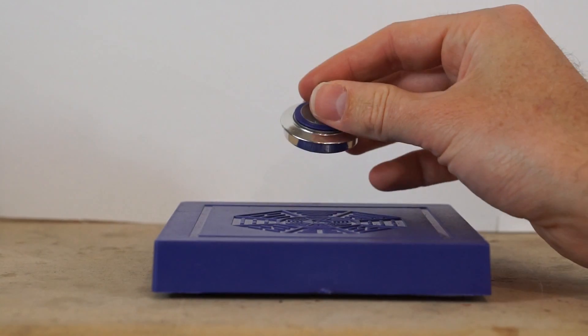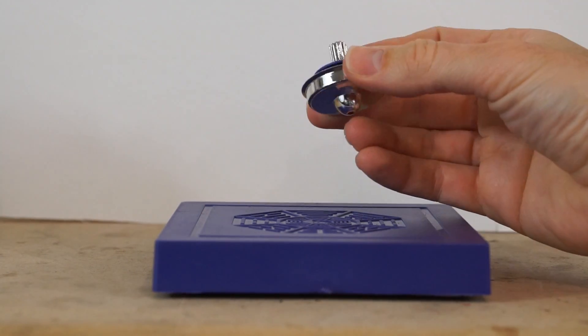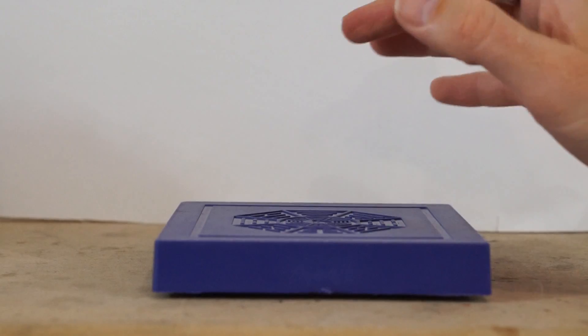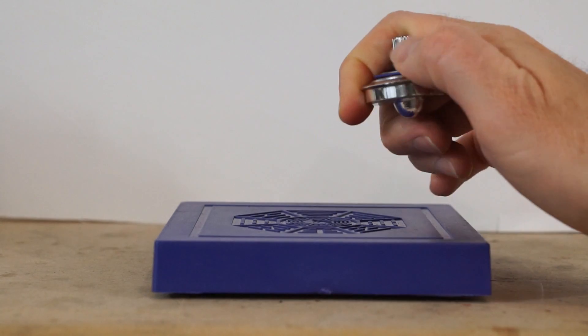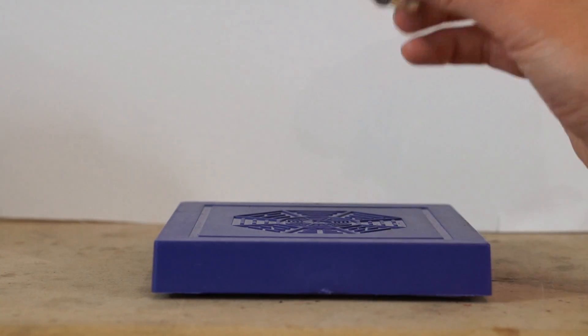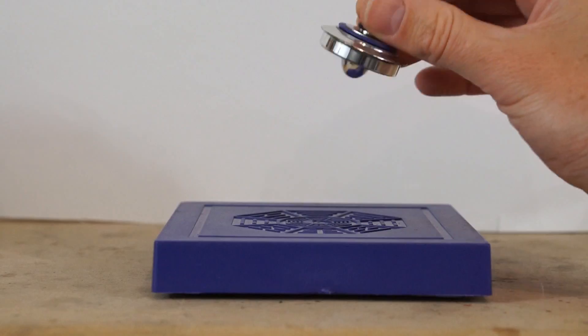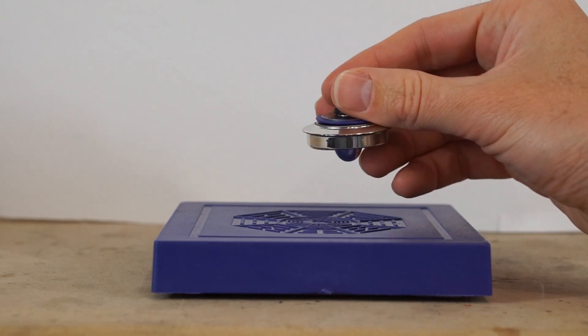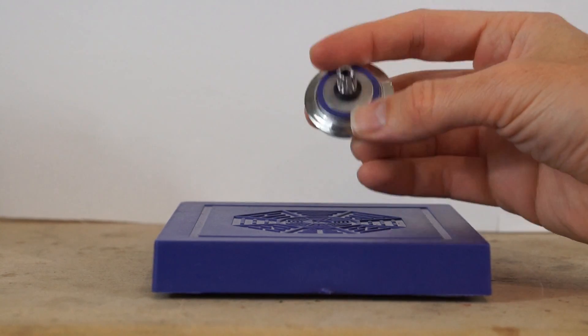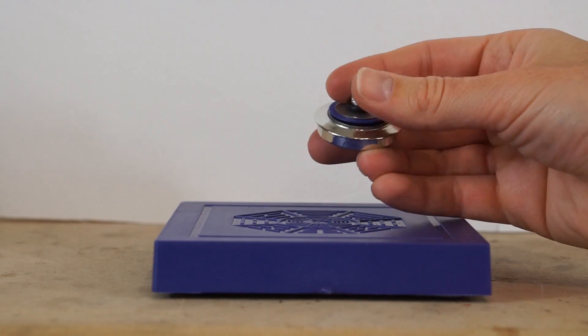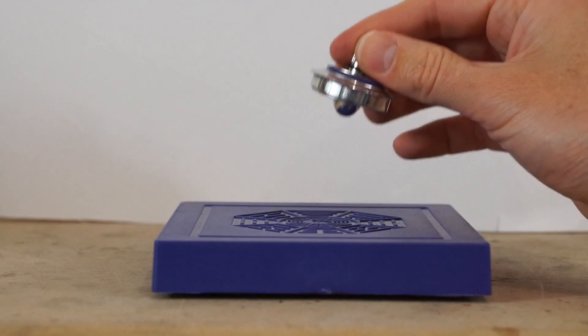So I got some longer spins than that earlier. It's hard to repeat how long it spins. It really depends on how flat your surface is and everything. So there's a lot of variability here. But the real question is, will it spin forever in a vacuum chamber? So regardless of how good my initial spin is, let's see if it will spin forever in a vacuum.